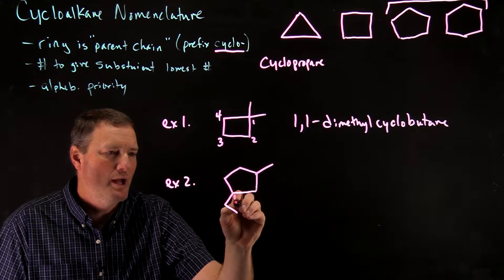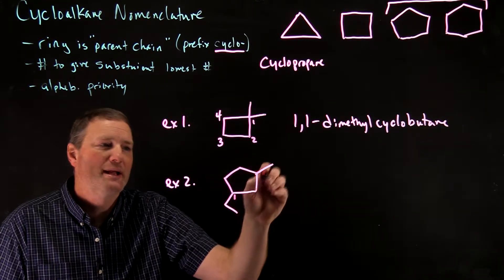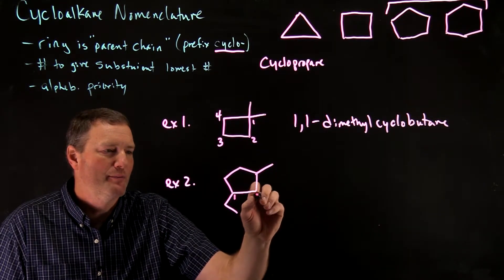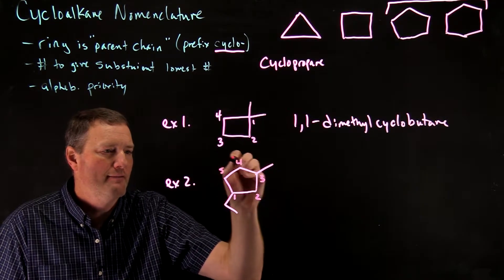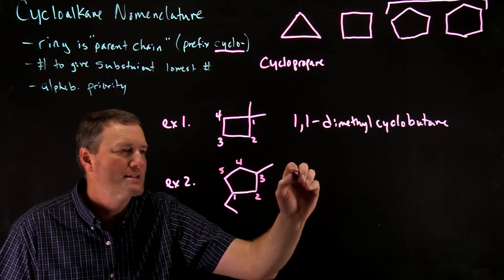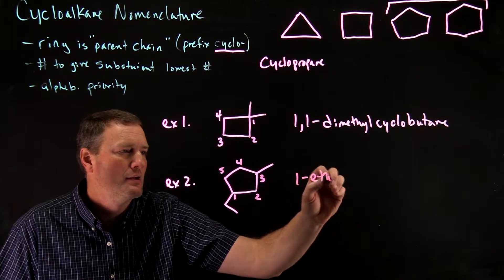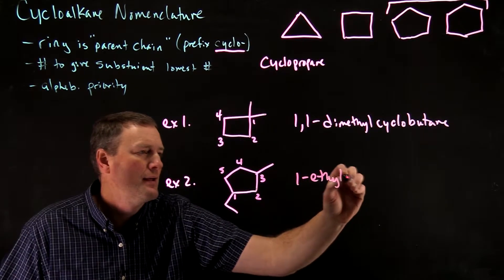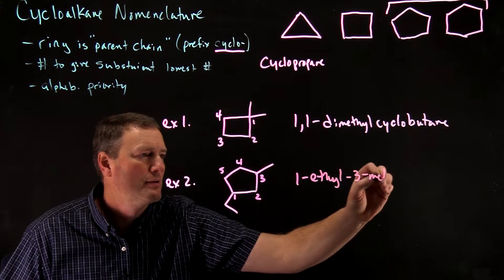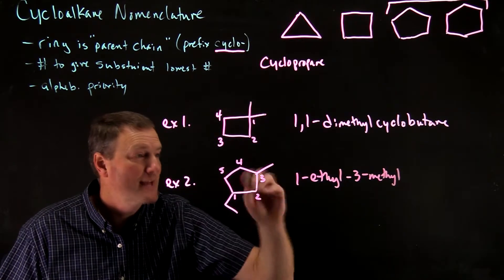So this would be 1. Then I'm going to go around the ring to give the other substituent the lower number: 2, 3, 4, and 5. So when I list out the name, this is now 1-ethyl-3-methylcyclopentane.